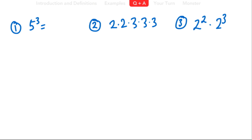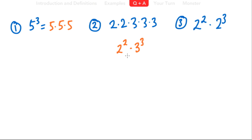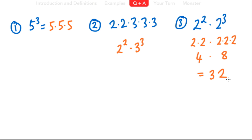Hopefully you've just paused, completed these, and now pressed play. Here are the answers. For number 1, writing in factor form: this is 5 times 5 times 5. For number 2, in exponential form: we've got two different bases that we can't mix, so we write this as 2 squared times 3 to the third power. For number 3, in standard form: 2 squared gives you 4, and 2 times 2 times 2 is 8, so 4 times 8 equals 32. So 32 is your answer.